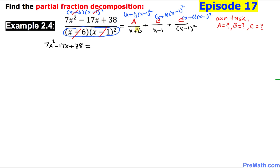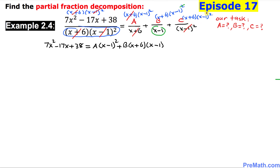Now let's look at the right-hand side. The x plus 6 cancels, so we get A times x minus 1 squared. For the next term, one of the x minus 1 factors cancels, giving us plus B times x plus 6 times x minus 1. Then the x minus 1 squared cancels, leaving plus C times x plus 6. I will call this Equation 1.